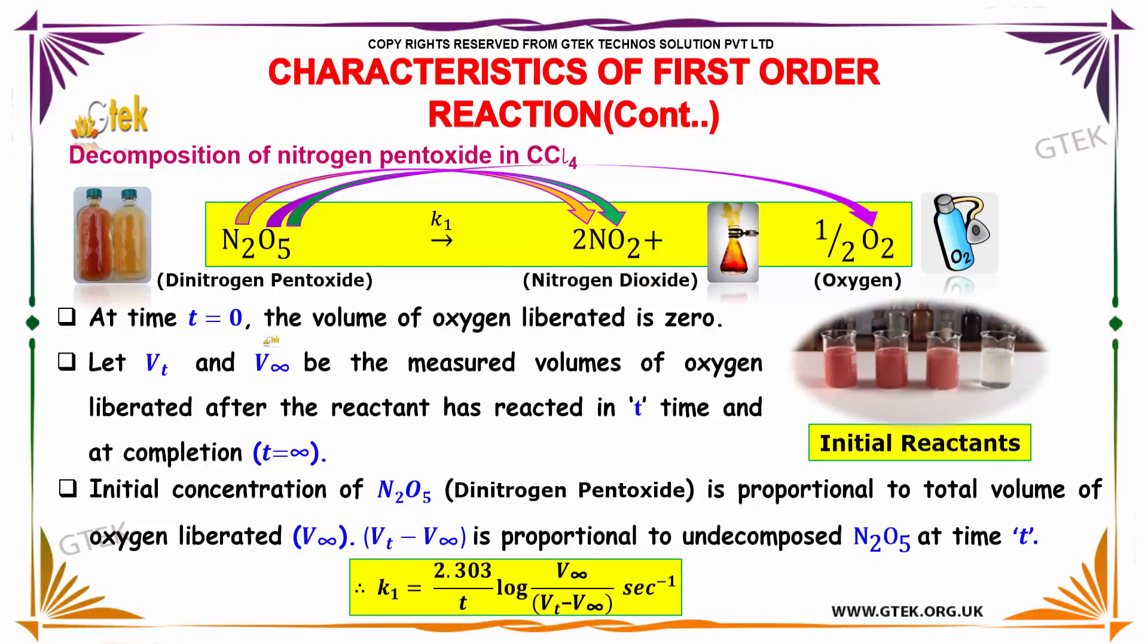At time t equals 0, the volume of oxygen liberated is zero. Let Vt and V∞ be the measured volume of oxygen liberated after the reactant has reacted in t time, and at completion t equals infinity. The initial concentration of N2O5 is proportional to the total volume of oxygen liberated, V∞.